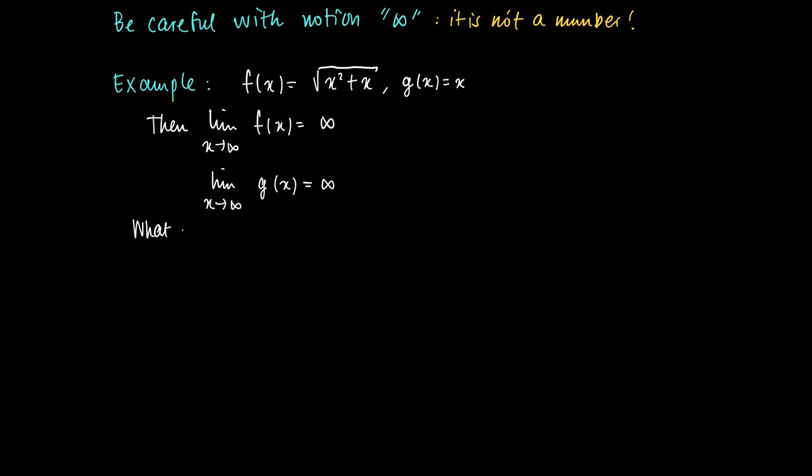So now the question is what happens if we look at the difference of the two functions. Can we calculate the limit of x to infinity of f(x) minus g(x)? What will it be when it exists? Because we're not sure whether this limit exists.